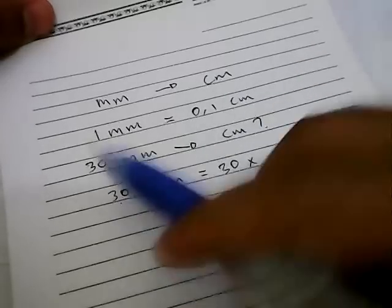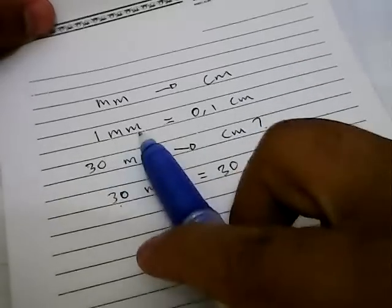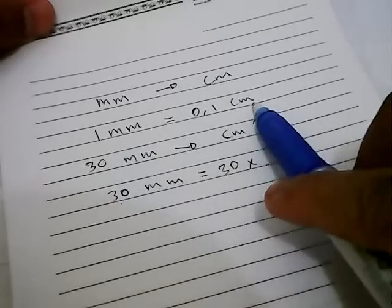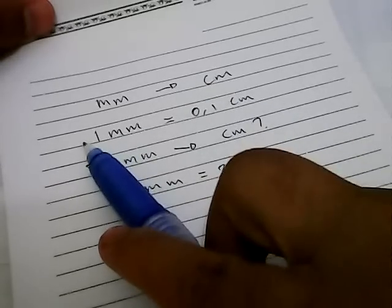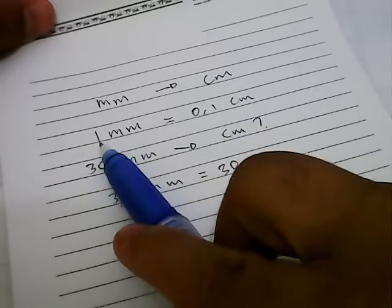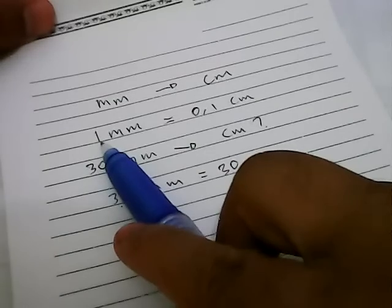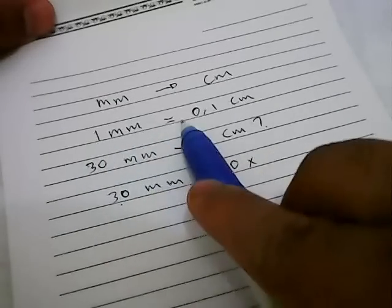1 millimeter is equal to 1 multiplied by 0.1, so the result is 0.1 centimeters.